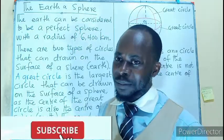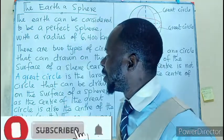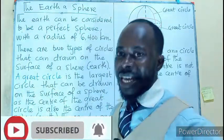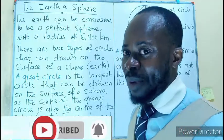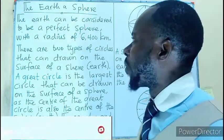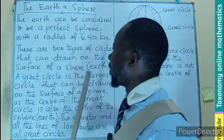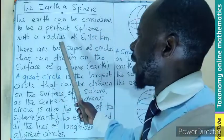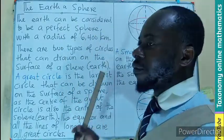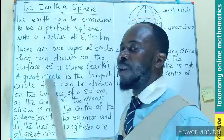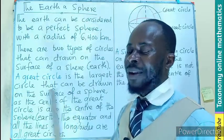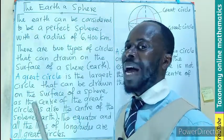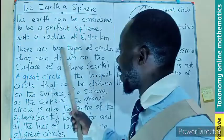We are going to consider the Earth as a sphere. It is not a perfect sphere, but we can consider it as one. So the Earth can be considered to be a perfect sphere with a radius of 6400 kilometers.